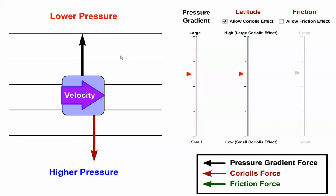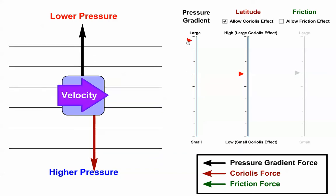We know we could increase the parcel speed by increasing the pressure gradient force, and that's marked by the velocity vector getting larger to indicate a faster speed.